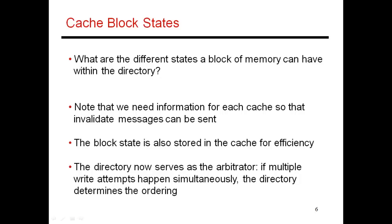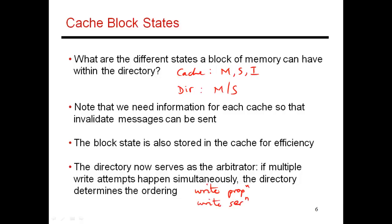Block states: when you bring a block into a cache, it can be in state M, S, or I, just as before. In the directory, you only need M or S state. If the block is not cached, the list of sharers will be empty — a block is either shared in multiple caches, shared in zero caches, or in modified state in exactly one cache. We also talked about the two conditions for a correct cache coherence protocol: write propagation and write serialization. Write propagation is straightforward — when a change is made, any subsequent read is forwarded to the writer, and the latest copy is sent on.